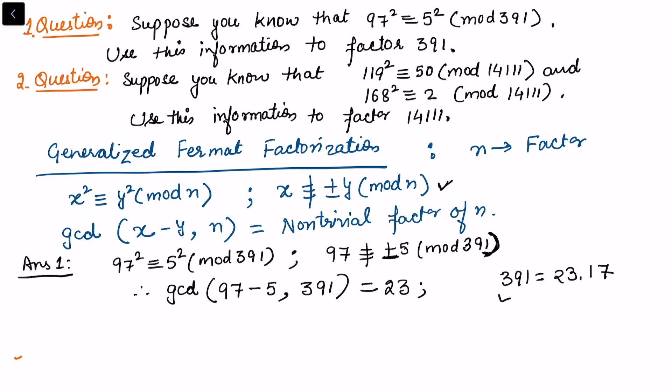Similarly, in question number two, I am going to use the same algorithm, but now this is not exactly in this format, so there is a slight difference. We need to search for x and y with the given information. The given information is: 119² ≡ 50 (mod 14111) and 168² ≡ 2 (mod 14111).